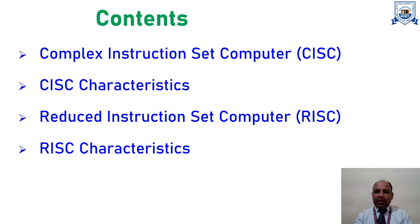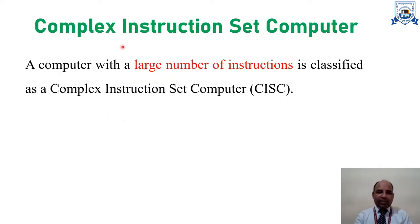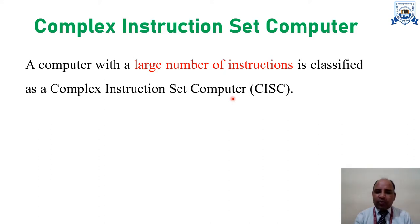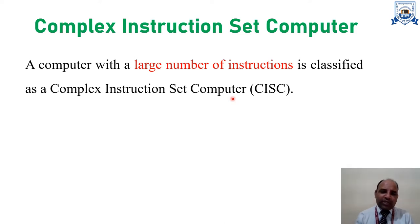Moving on to the next slide, we are defining the Complex Instruction Set Computer. A computer has many different types of instructions for performing particular tasks. An instruction has two parts: one is the opcode, which stands for operation code, and the other is the operand — the variable or data on which the opcode operation is performed.